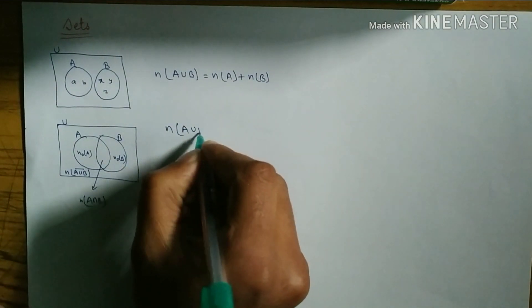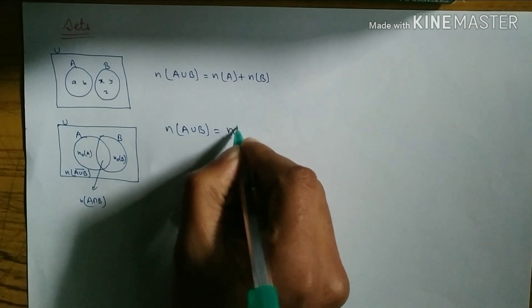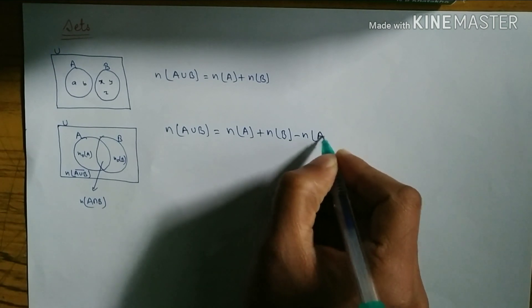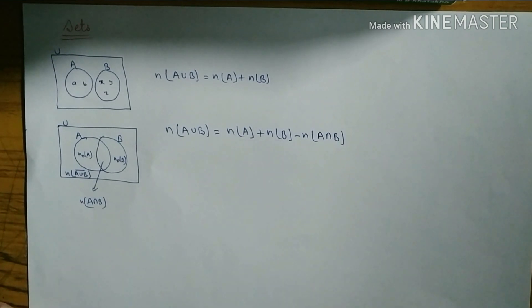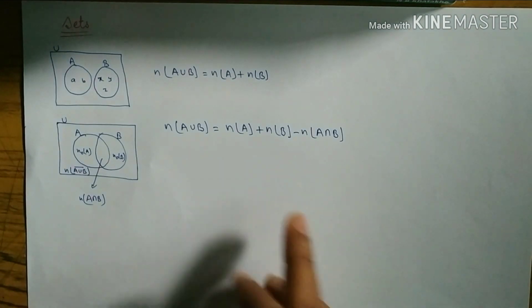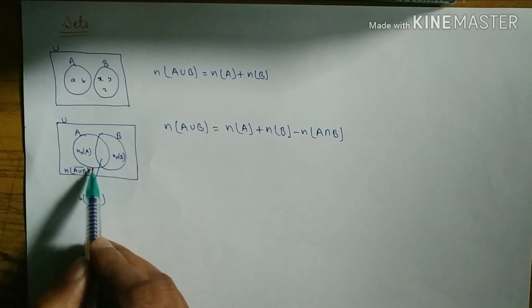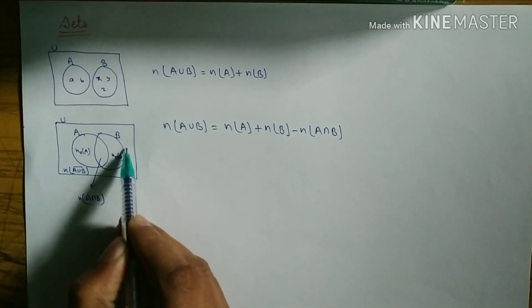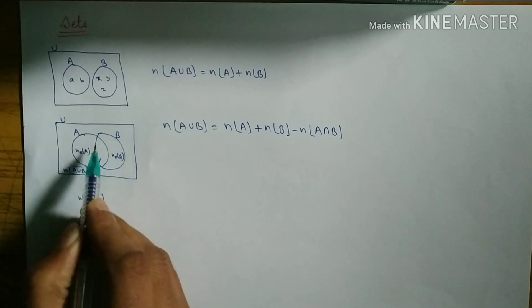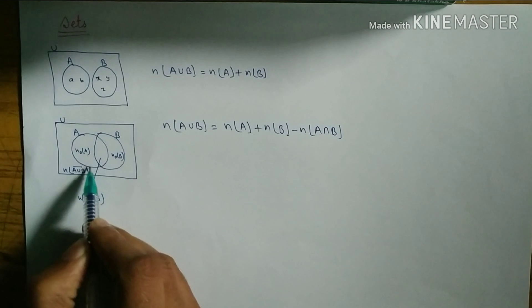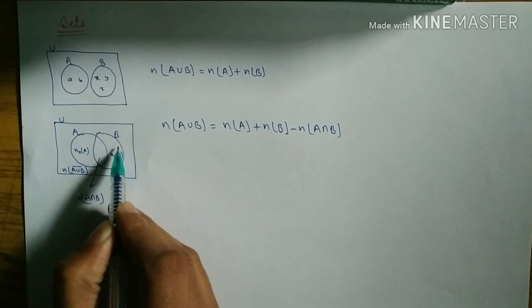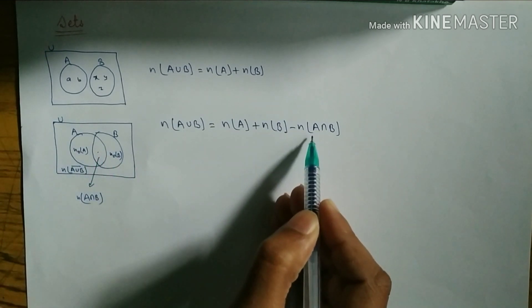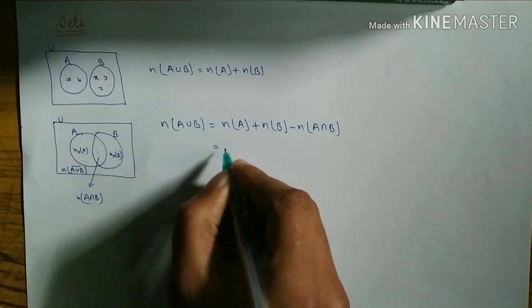Now we write the formula: n(A∪B) is equal to n(A) plus n(B) minus n(A∩B). Here I will describe how this happens — n(A) means this total part, n(B) means this whole set part, minus A intersection B. We subtract the intersection because when taking n(A) this part is included, and n(B) also includes it again, meaning the intersection is counted twice, so we subtract it once.